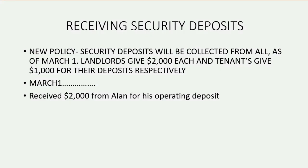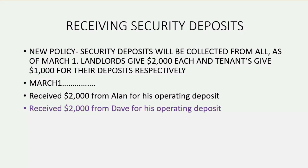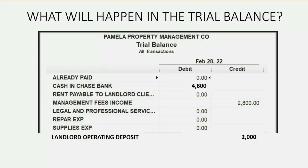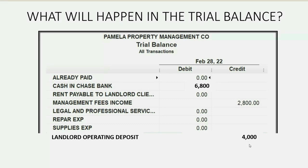Now, what about the next transaction? We received another $2,000 from another landlord-client, Dave, for his operating deposit. The landlord operating deposit will increase by $2,000 because we owe $2,000 more to Dave. And if the money went into the Chase Bank account, that will increase by $2,000 and become $6,800. That means that of the $6,800 in the operating account, $4,000 should be reserved to be able to pay back a landlord's deposit if they leave us.